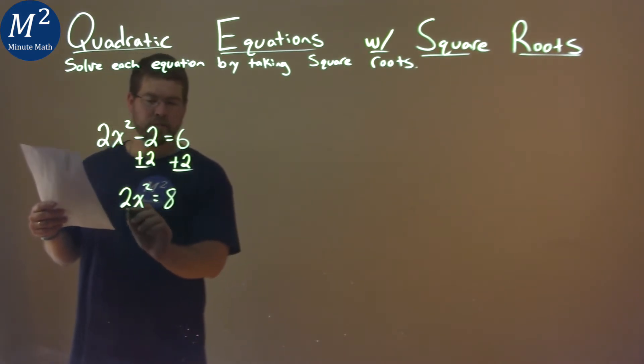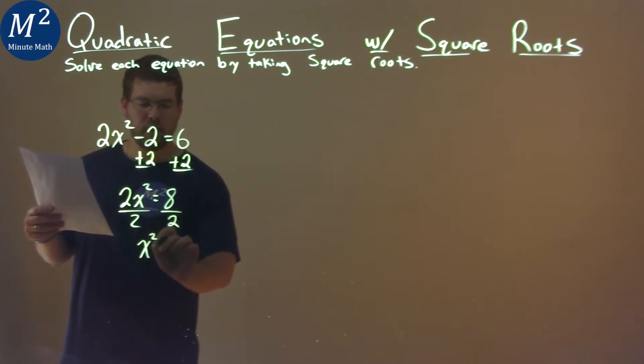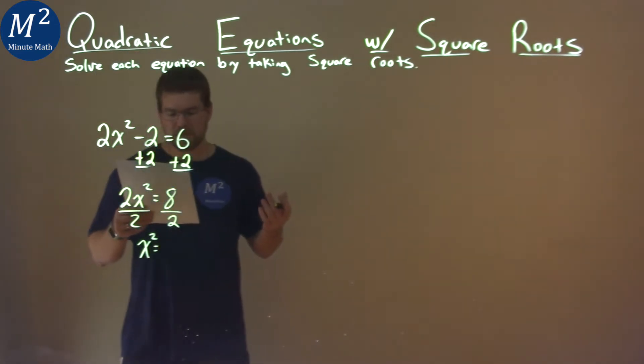Well, 2 is being multiplied by x squared. Let's divide both sides by 2. Let's get x squared by itself. x squared equals 8 divided by 2 is just 4.